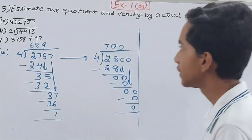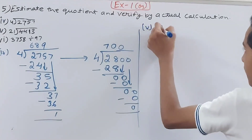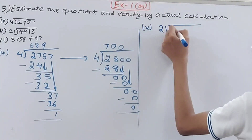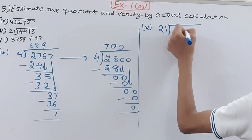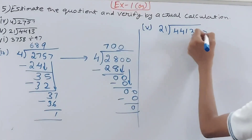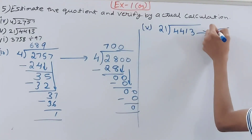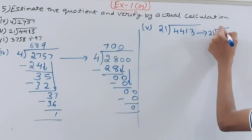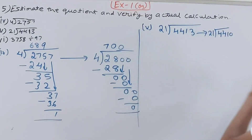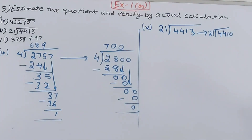Fifth part: 4413 ÷ 21. We can estimate this as 4410 ÷ 21, rounding off to the nearest tens.